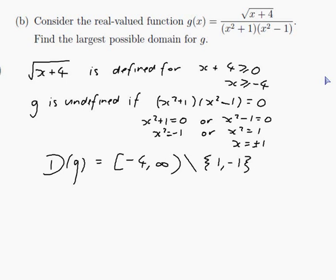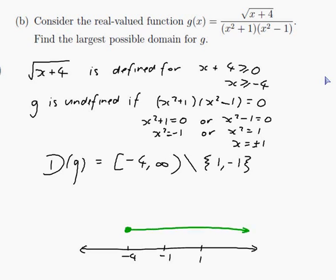We can write the domain in interval notation using a number line with minus 4, minus 1, and plus 1 marked. From minus 4 including, up to infinity, but without minus 1 or 1. So the largest possible domain of g is from minus 4 to minus 1, union from minus 1 to 1, union from 1 to infinity.